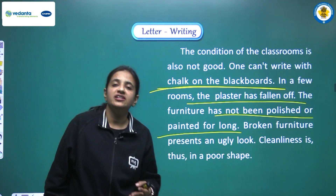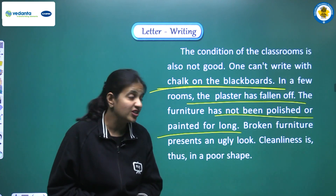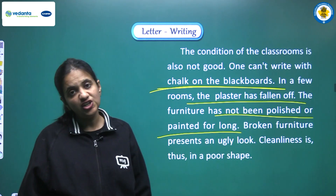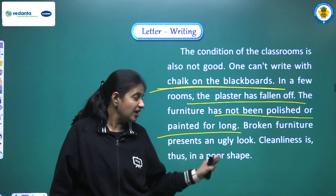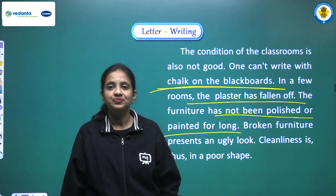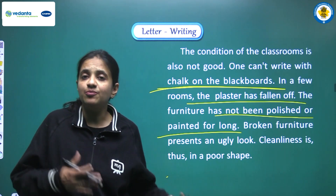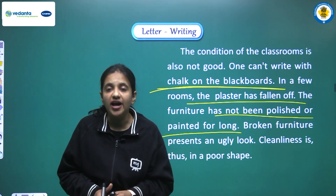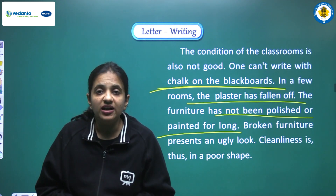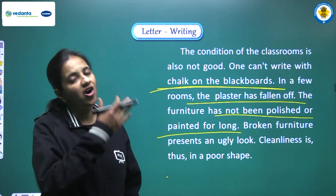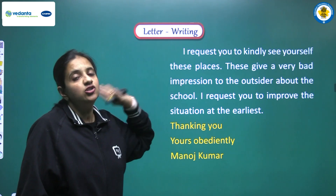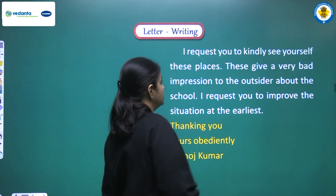Broken furniture presents an ugly look. Cleanliness is thus in a poor shape. After presenting all the problems, we write this conclusion: 'cleanliness is really in poor shape in our school.' We have to present the present condition — what the problematic areas are and the present scenario — because we have to convince our school principal that improvement is required. Finally we write: 'I request you to kindly see yourself these places.'